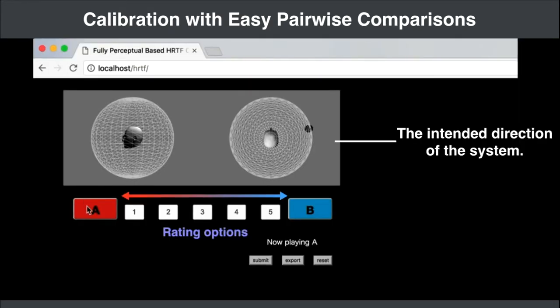During calibration, the system presents a pair of test signals. The user listens to the test signals and provides feedback by selecting one of the five scale options that represents the sound that has perceptually better spatialization.